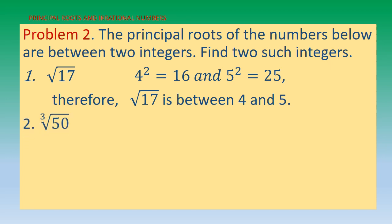Number two: the cube root of 50. Think about perfect cubes near 50. We have 3³ = 27 and 4³ = 64. Since 50 is between 27 and 64, the cube root of 50 is between 3 and 4.